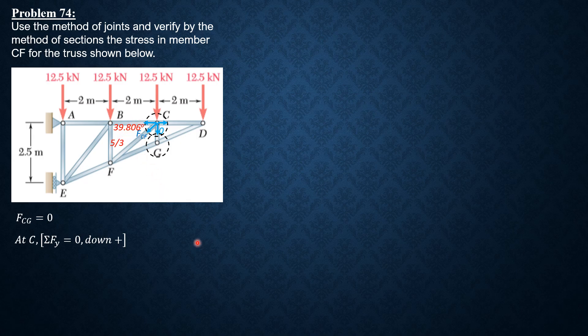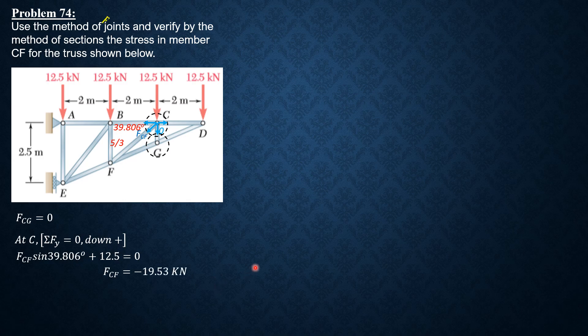The angle FCF makes with the horizontal is 39.806 degrees. Summation of forces Y equals zero, downward positive: FCF sine 39.806 plus 12.5 equals zero. Therefore FCF = negative 19.53 kilonewtons, or FCF = 19.53 kilonewtons compression.